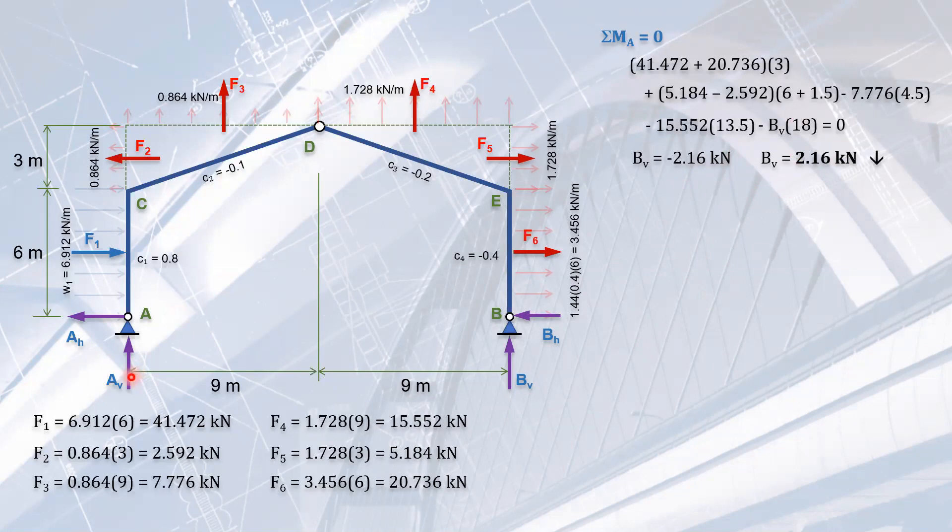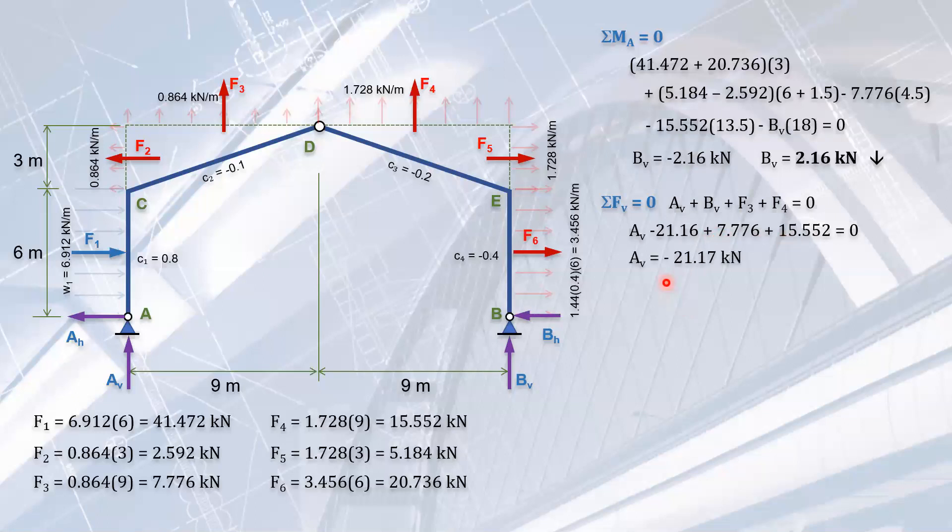Summation of vertical forces equals zero. AV plus BV plus F3 plus F4 equals zero. Using the negative sign for BV because that should be the sign if assuming upward force, we solve AV equals negative 21.17 kilonewtons. This means AV is also downward. Both vertical reactions are downward due to wind. Remember, this is only due to wind, not including the weight of the structure.